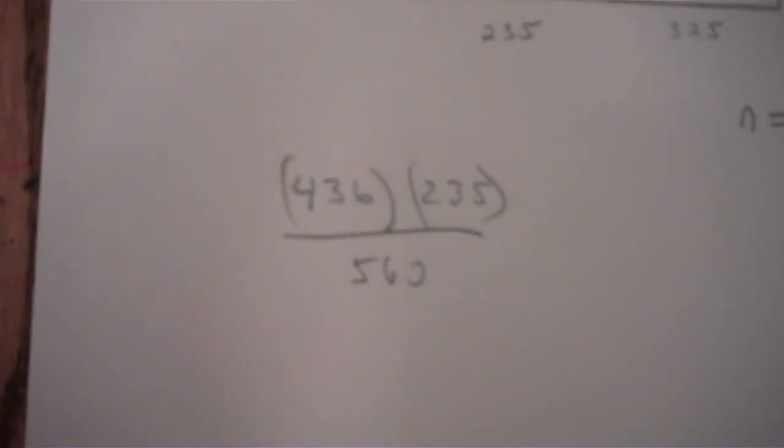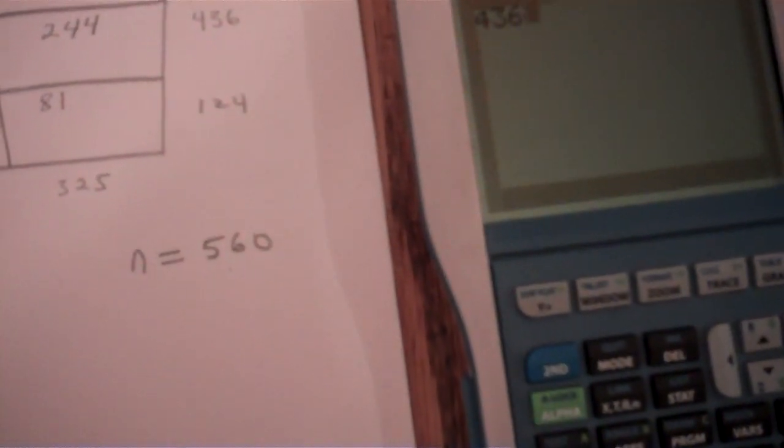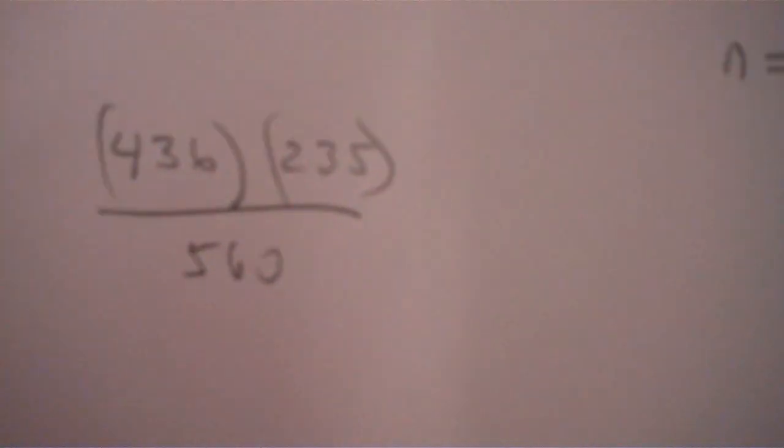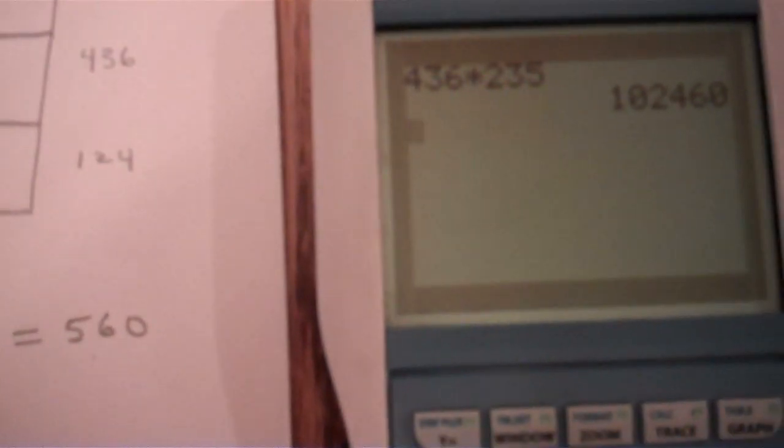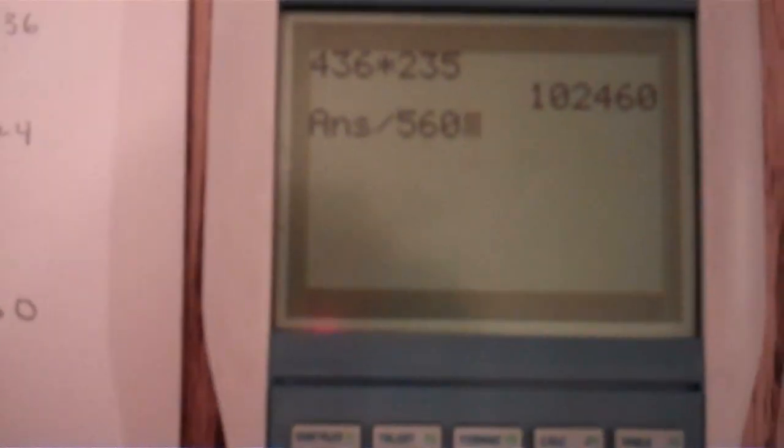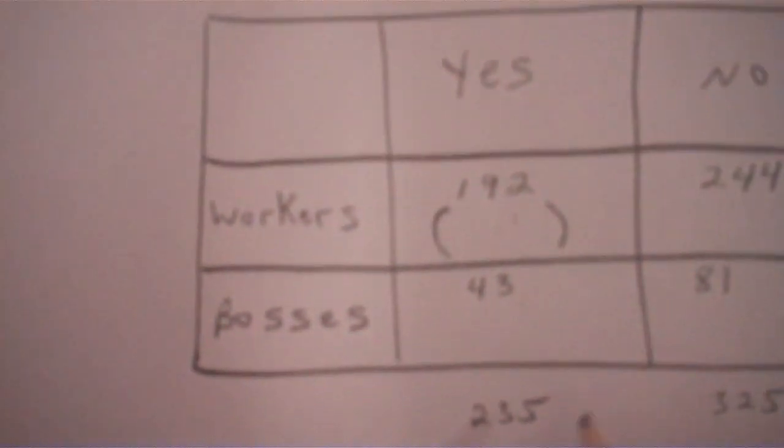So I'm going to multiply over here, 436 times 235, 235 equal to, and then divided by 560. Okay, so I get 182.96. We're going to round it to 183. So we have 183.